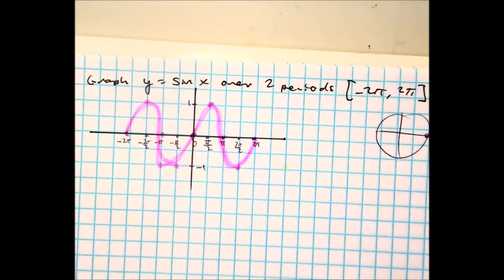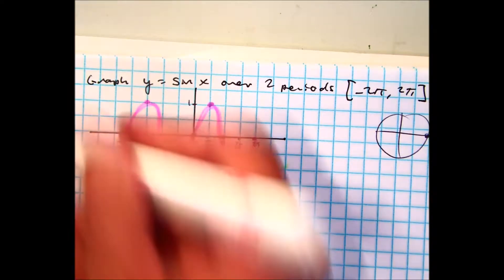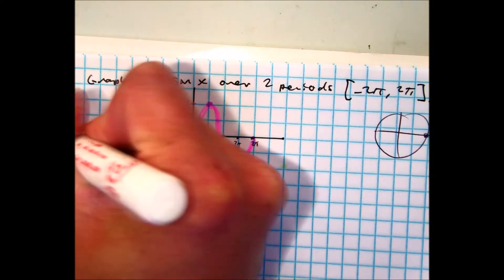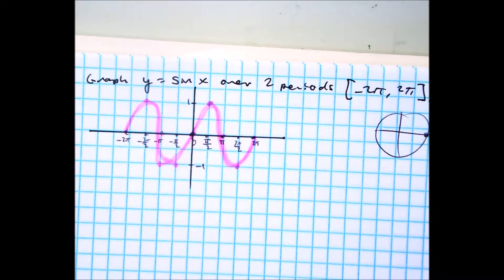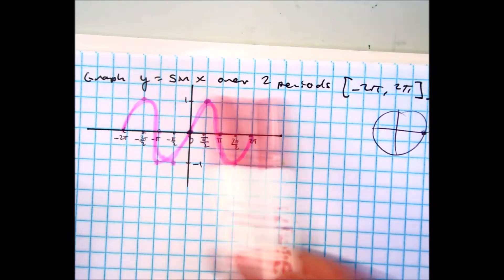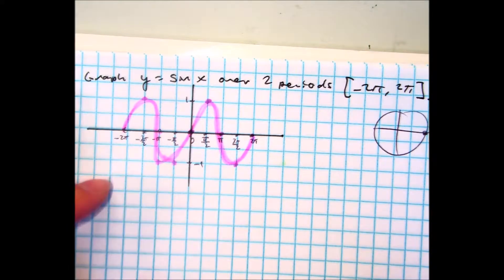All right, so let's go ahead and label this graph number one. And we just graphed sine of x over two periods. And my question is this.